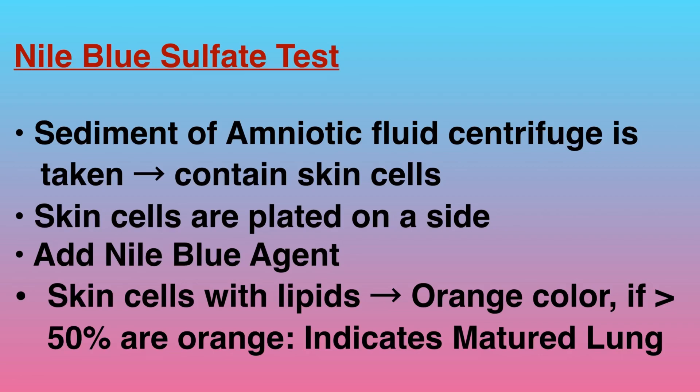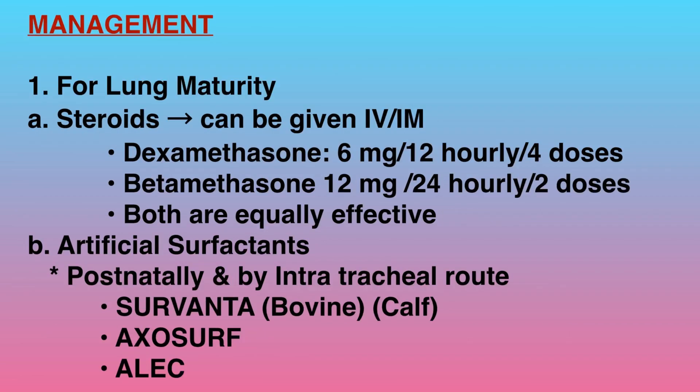Now let's understand the Nile blue sulfate test. A centrifuged sediment of amniotic fluid is taken, which contains skin cells. The skin cells are plated on a slide, we add the Nile blue agent, and then skin cells with lipid turn orange color. If more than 50% are orange, this indicates matured lung.